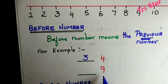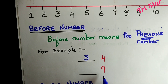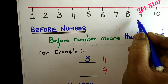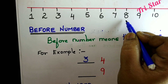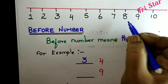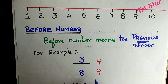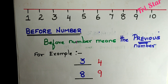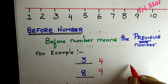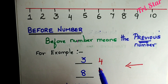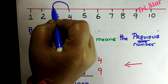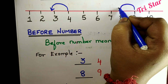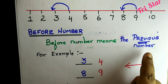Now let us look at another example. It is given 9. What is the previous number, that is the before number of 9? Look at the numbers from 1 to 10 — before 9 what is given? It is 8. So, before number of 9 is 8. Before numbers always move towards the left. So 4→3, and 9→8, moving towards left.